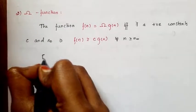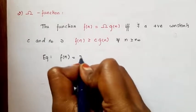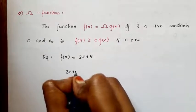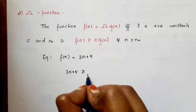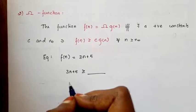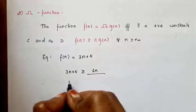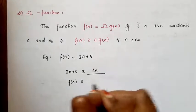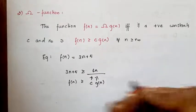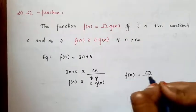Let us see an example. I am taking the same value: f(n) equal to 3n plus 5. Here the function 3n plus 5 must be greater than or equal to something, meaning the bounding function must be less than this one. For that I take 6n. Here 6 is the constant c and n is g(n). So we can write f(n) = Ω(n).